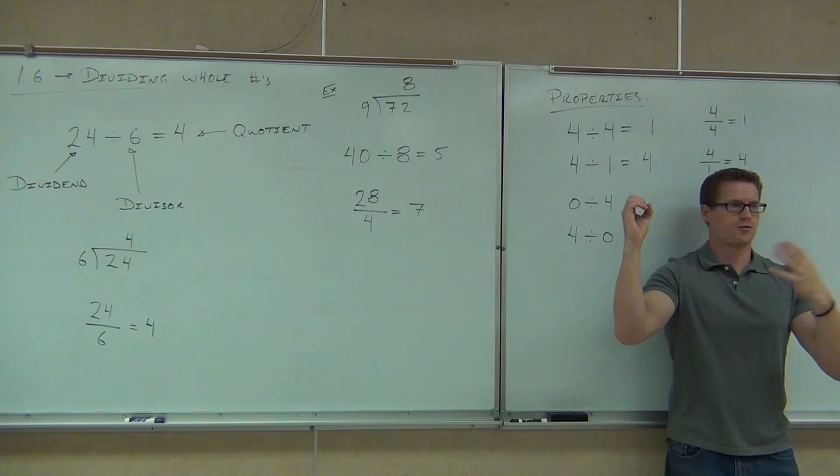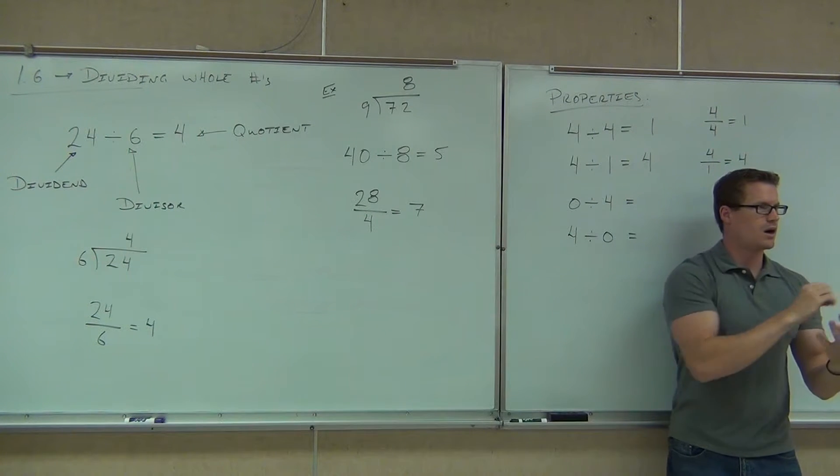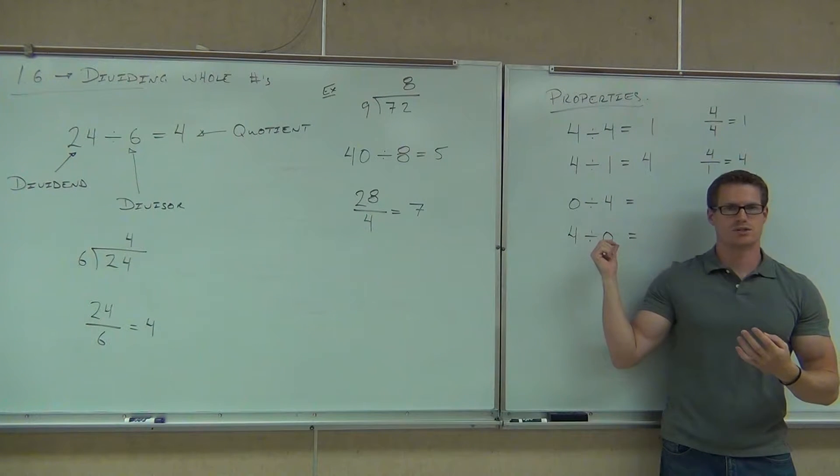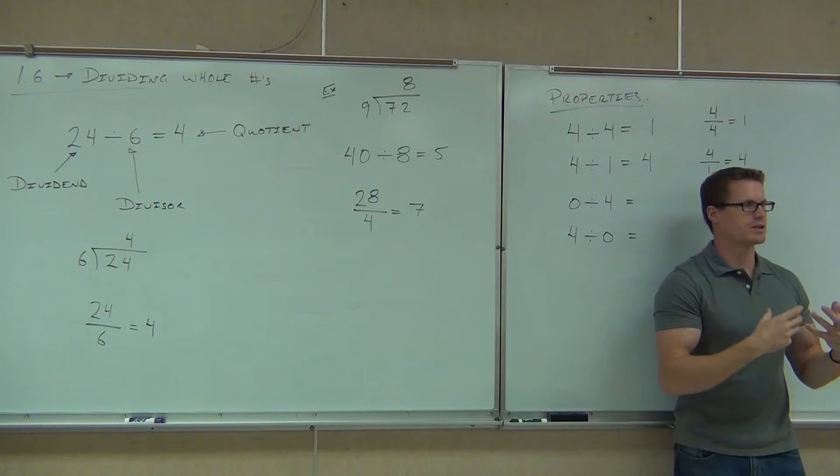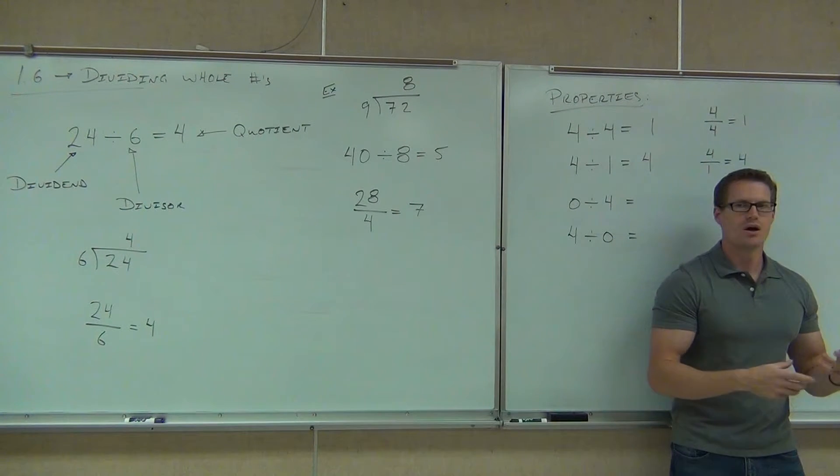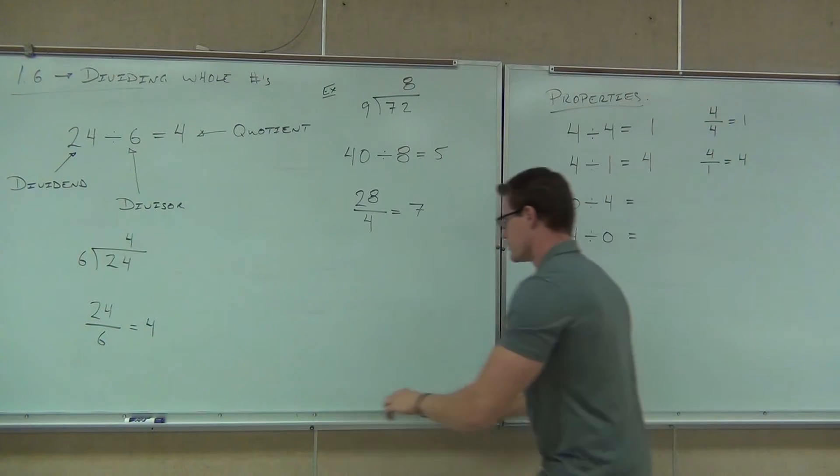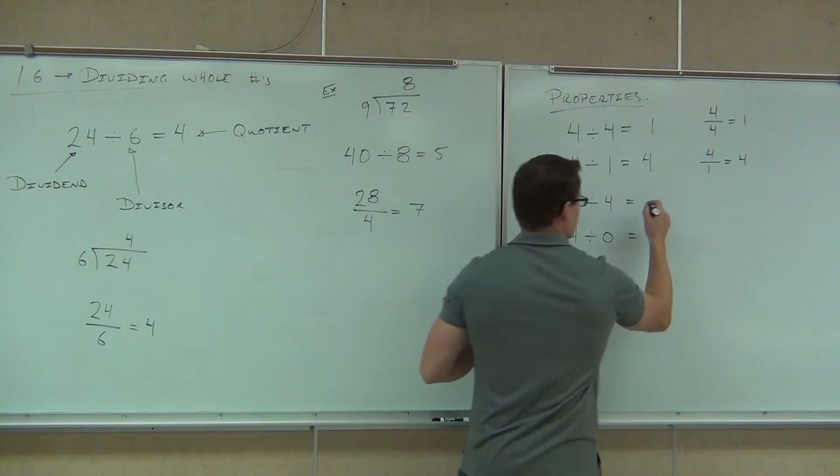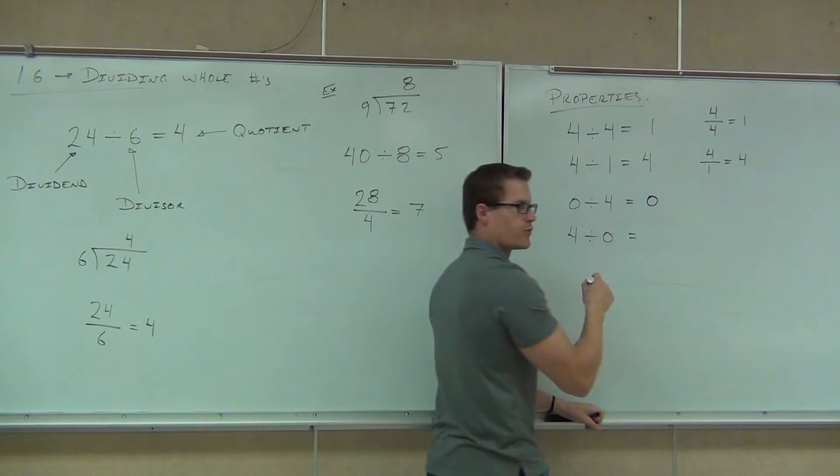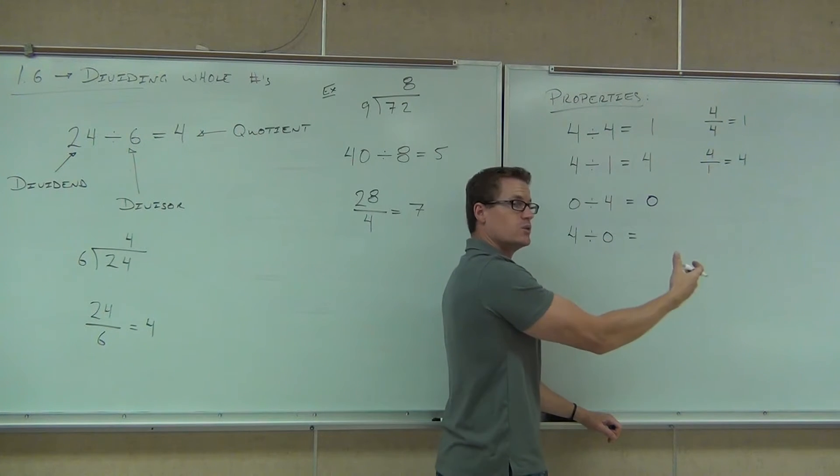I have zero bucks and four accounts, that's zero per account. I have four dollars and zero accounts. I can't ask the question how many is in each account because I don't even have an account. One of these things is reasonable. This answer is zero. This one, if you've heard it before, is called undefined because you can't do it.